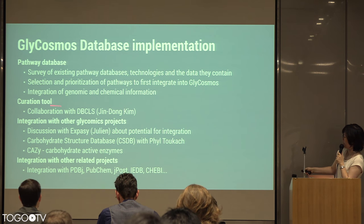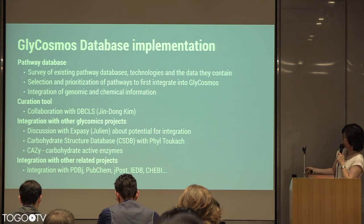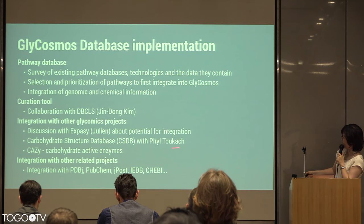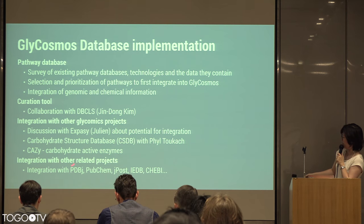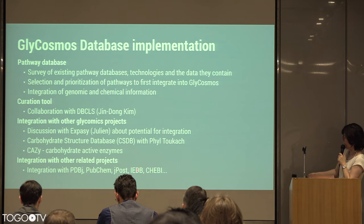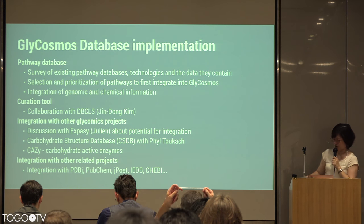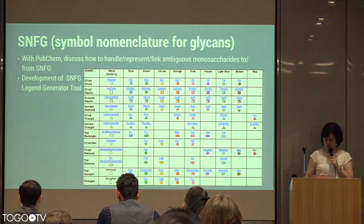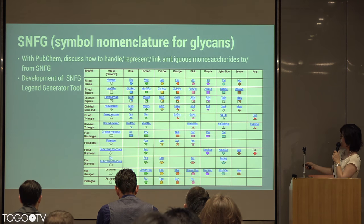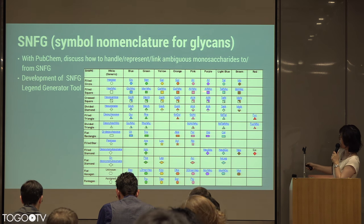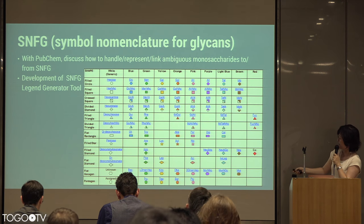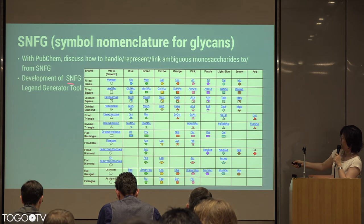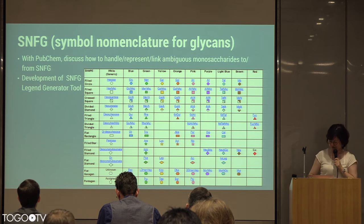We're going to work with Jin Dong-King on a DPSLs configuration tool, integration with other glycomics projects including Julian, GlycoWorkbench, CSDB, and others, as well as related projects such as PDBJ, PubChem, Daypost, the Epitope database, and ChEBI. For the SNFG visualization work, I will talk with Evan about how to represent ambiguous monosaccharides, and we're also going to develop a legend generator tool using the symbols.